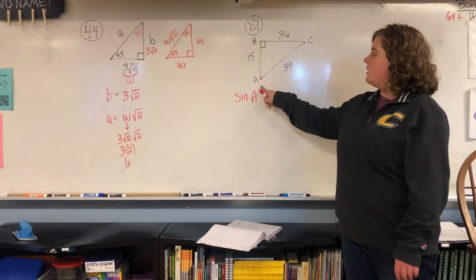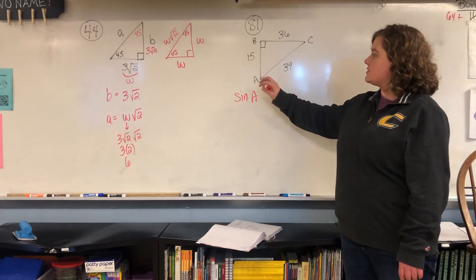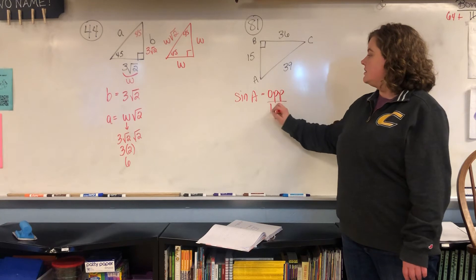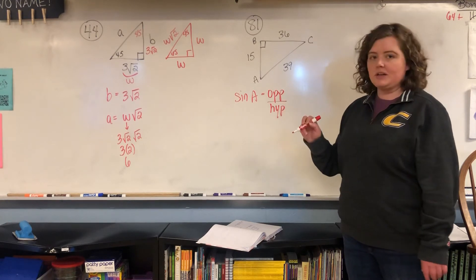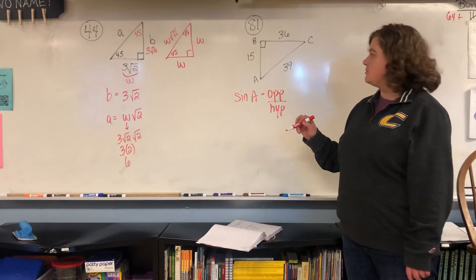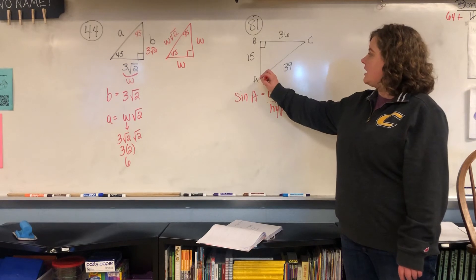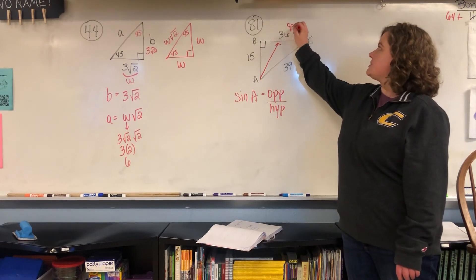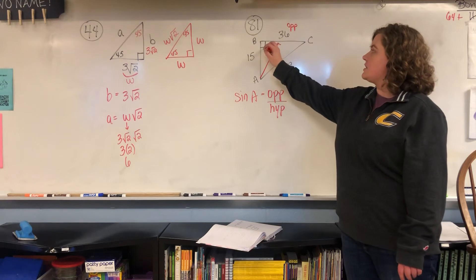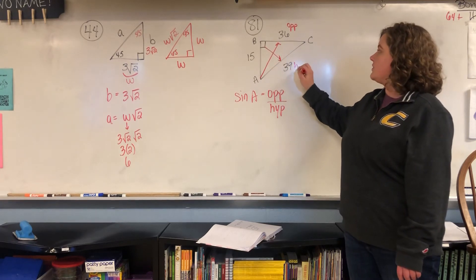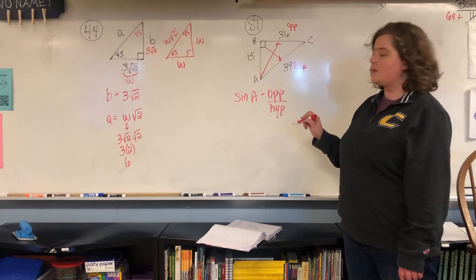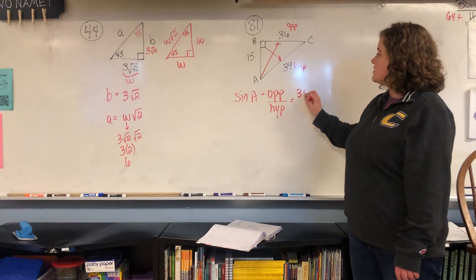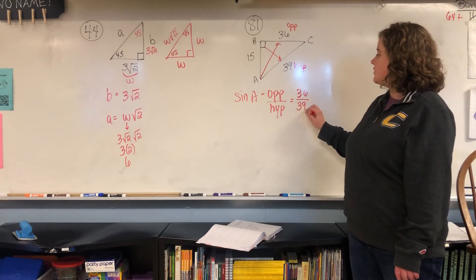Here's A. Sine is opposite over hypotenuse, which is also on your paper in your notes. So you start at A, you point across the triangle to find the opposite, and then if you start at the 90 and point across, you'll find the hypotenuse. So opposite over hypotenuse, we're going to do 36 over 39.